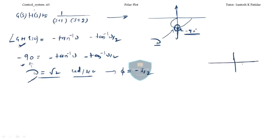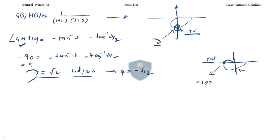Similarly, if you draw for a third-order system having three finite poles, you can find out two things: one is intersection with the imaginary axis and the other is the intersection with the real axis. In this case you will equate with minus 180 degrees and whatever Omega value you get corresponds to that intersection point.